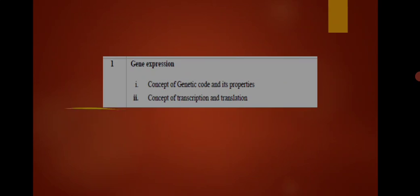Next we will discuss gene expression, in which we study the concept of genetic code and its properties, as well as transcription and translation. For the genetic code, we must first know about amino acids — what the classification of amino acids is, how many standard amino acids there are, and what non-standard amino acids exist. Then we can study properties of the genetic code, such as that the genetic code must be universal.